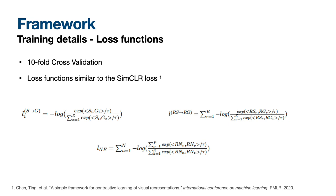We train all the models using 10-fold cross-validation technique. The loss function is similar to the SimCLR loss. The idea of these losses is to enforce similarity in correct representation pairs, and decrease similarity between wrong representation pairs.